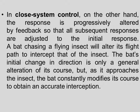In closed system control, the response is progressively altered by feedback so that all subsequent responses are adjusted to the initial response. A bat chasing a flying insect will alter its flight path to intercept the insect. The bat's initial change in direction is only a general alteration of its course, but as it approaches the insect, the bat constantly modifies its course to obtain an accurate interception. In the closed system, subsequent responses are adjusted based on the initial response.